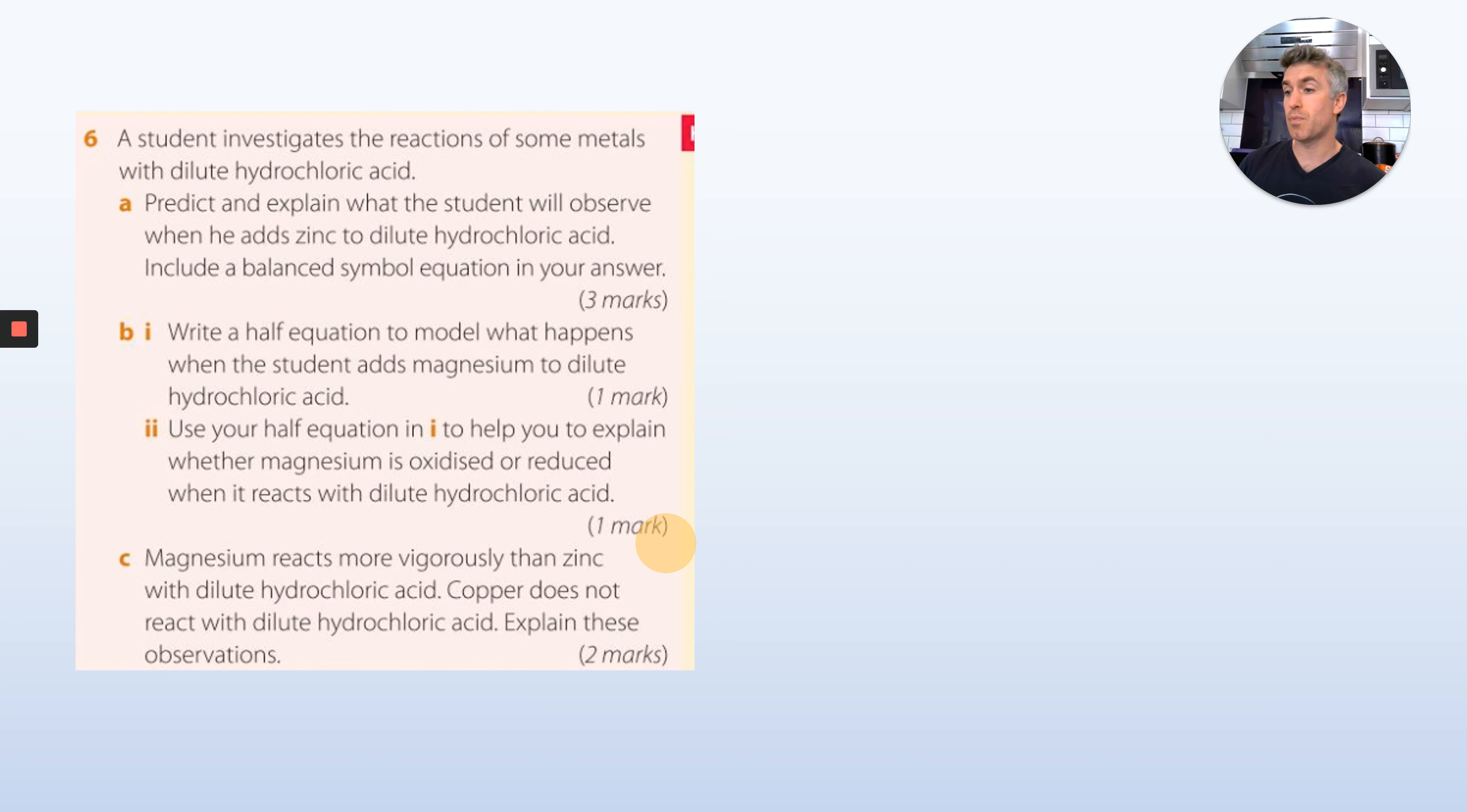And this last one is a really high question. Another really exam-style question. A student investigates the reactions of some metals with dilute hydrochloric acid. Predict and explain what the student will observe when he adds zinc to dilute hydrochloric acid, and include a balanced symbol equation in your answer. This kind of links to the previous lesson. Write a half equation to model what happens when the student adds magnesium to dilute hydrochloric acid. Remember, a half equation is just showing what's happening to the electrons, so when something goes from being an atom to an ion or an ion to an atom. So in this one I will talk about the magnesium half equation. Magnesium starts off as a magnesium atom and then it becomes a magnesium ion half equation.